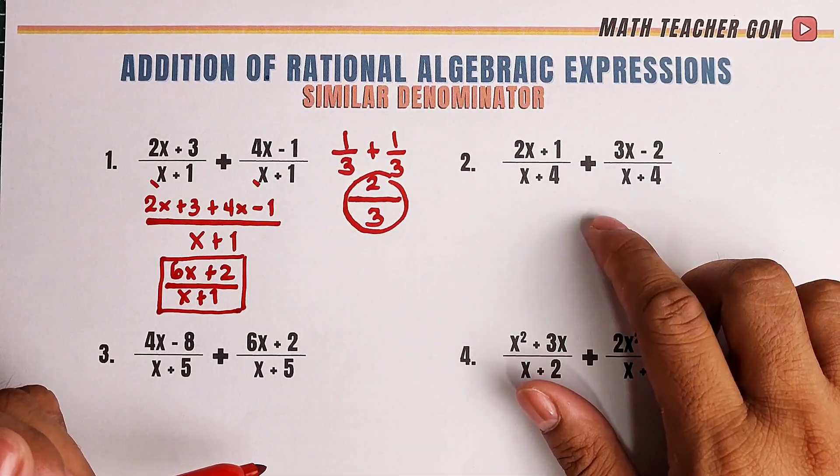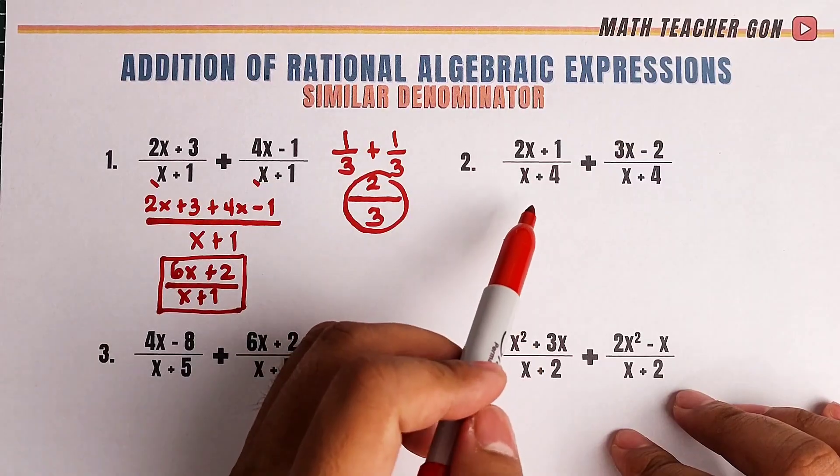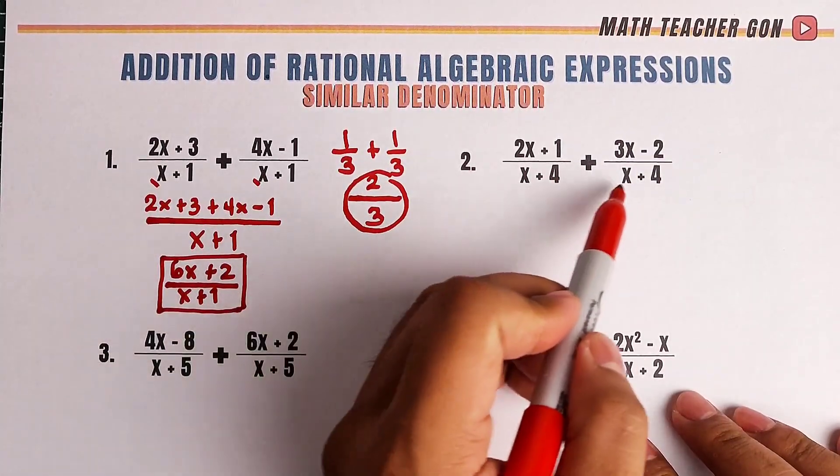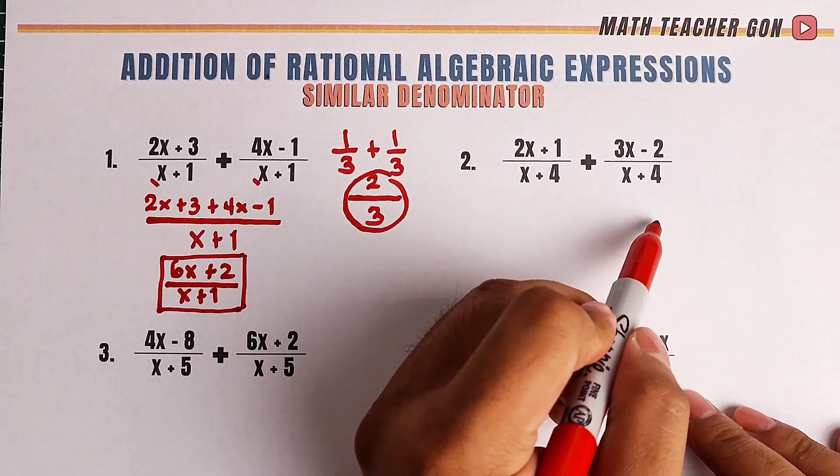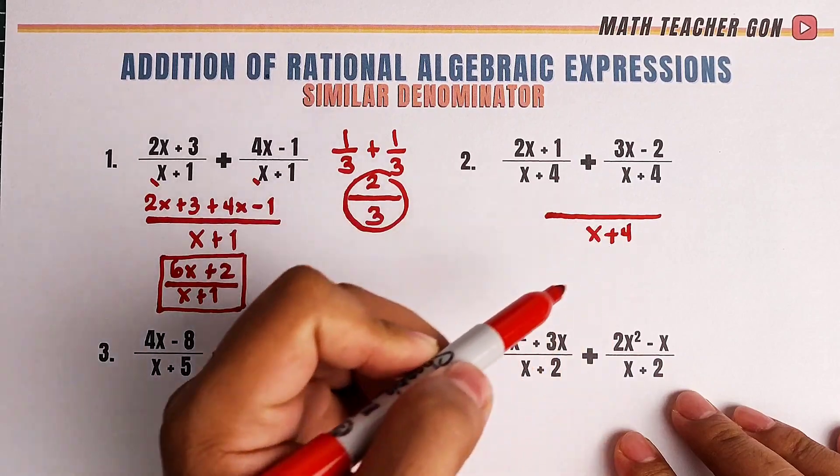Let's continue with item number 2. For number 2, we are given 2x plus 1 over x plus 4 plus 3x minus 2 over x plus 4. We have the similar denominator x plus 4.